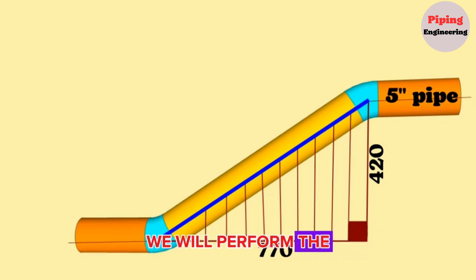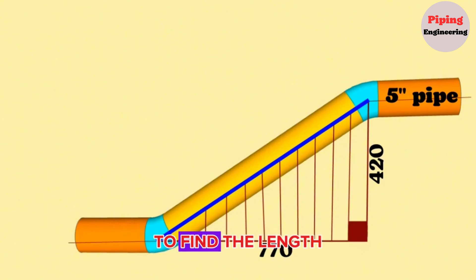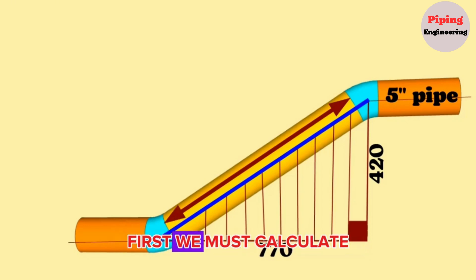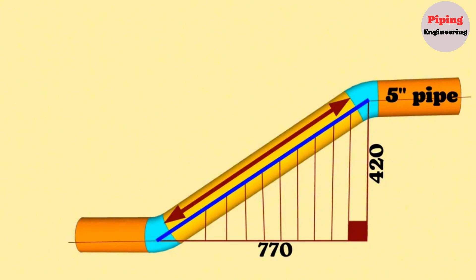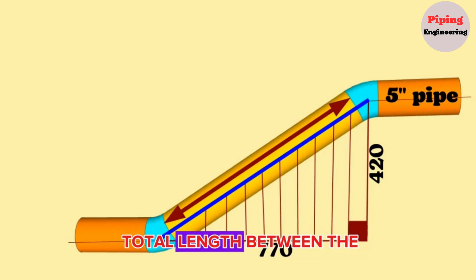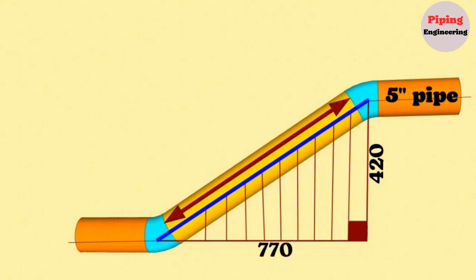We will perform the calculations in this video on a 5-inch 3D model view of a pipeline. To find the length of the yellow color pipe piece between these two elbows, first we must calculate the distance between the centers of the elbows. On the next stage we need to find the lengths of the 5-inch cut elbows, and finally from the total length between the centers of the elbows we will subtract the lengths of the cut elbows and the gaps for welding. Let's go step by step.